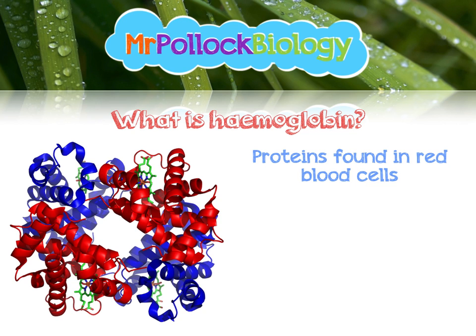Haemoglobin is really interesting because it exhibits many levels of protein structure. If you're unfamiliar with protein structure, you should review my Unit 1 video. They exhibit primary, secondary, and tertiary structures, which all proteins do, and they also exhibit quaternary structure, where more than one polypeptide chain is associated together. Haemoglobin has two alpha subchains and two beta subchains, all working as one big molecule.